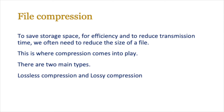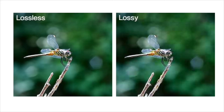Moving on to the main focus of the lesson: compression. To save storage space and reduce transmission time, we often need to reduce the size of a file. From IGCSE you should know there are two main types: lossless and lossy compression. Both are applied to files to reduce their size. Looking at an example image compressed with both methods, you can see the lossy-compressed version has blurriness and artifacting — you can still make out the image, but it's not as clear as the lossless version on the left, which matches the original. The lossless version is of course a higher file size.